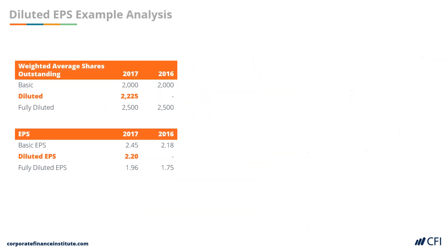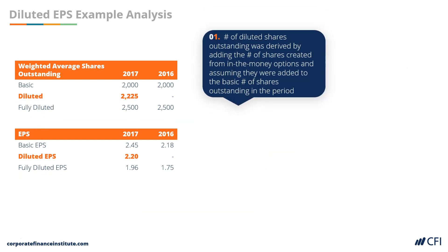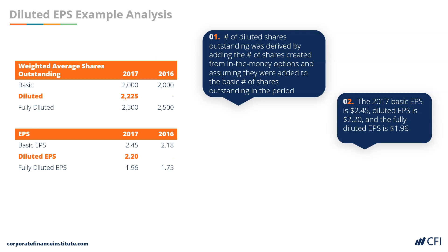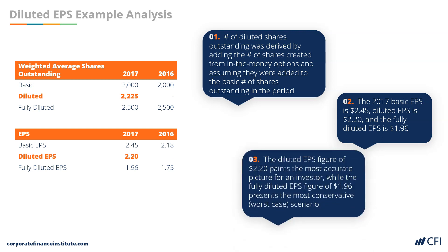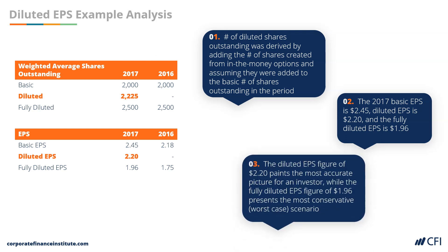Looking back at this example, we can see that the number of diluted shares outstanding was derived by adding the number of shares that would be created if the in-the-money options were exercised. We can also compare the three numbers for earnings per share, where we can see that the basic earnings per share is the highest, followed by the diluted earnings per share, and then the fully diluted earnings per share. The diluted earnings per share paints the most accurate picture for an investor, while the fully diluted earnings per share shows a more conservative worst-case scenario.